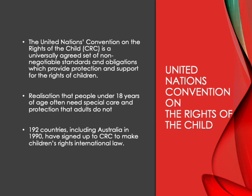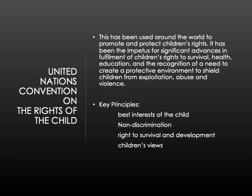The United Nations Convention on the Rights of the Child is a universally agreed set of non-negotiable standards — not just Australia, not just the UK or US, it's universally agreed. People under 18 years of age need care and protection; adults can advocate for themselves, a child cannot. 192 countries have signed up to make that international law. It's been used around the world to promote and protect children's rights, advancing recognition of children's rights to survival, health, education and so on.